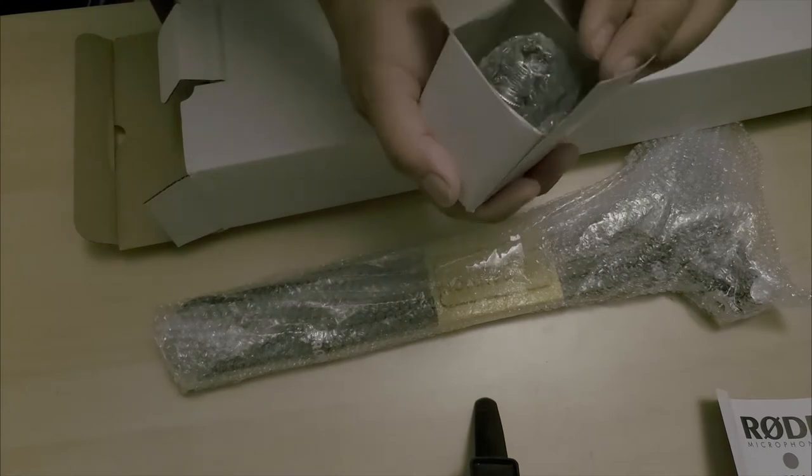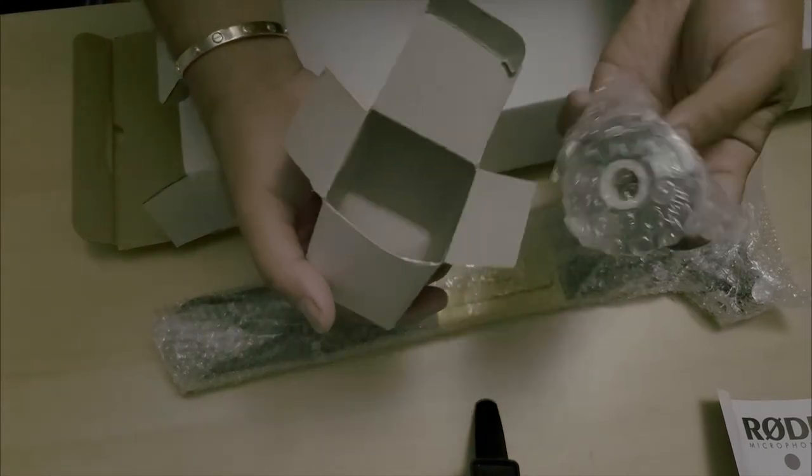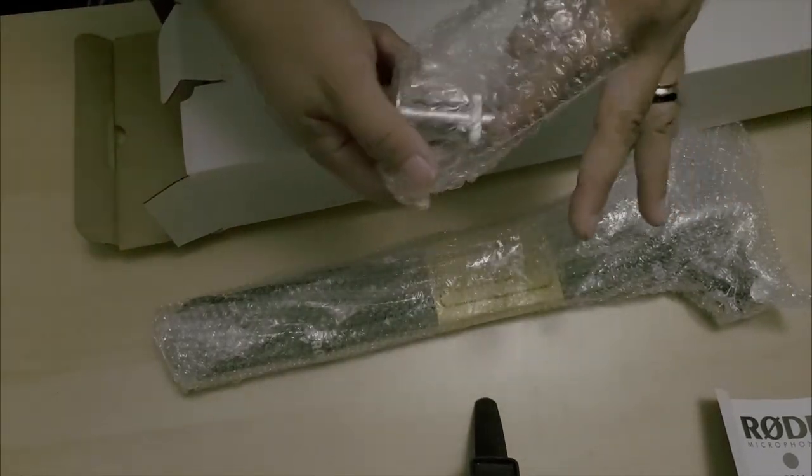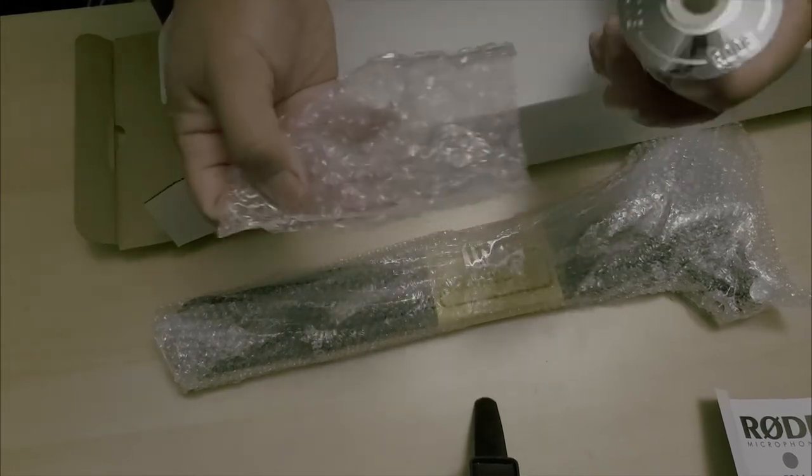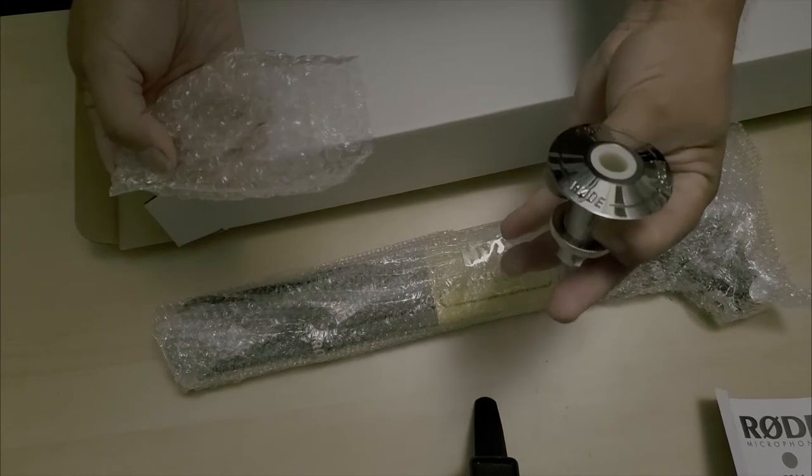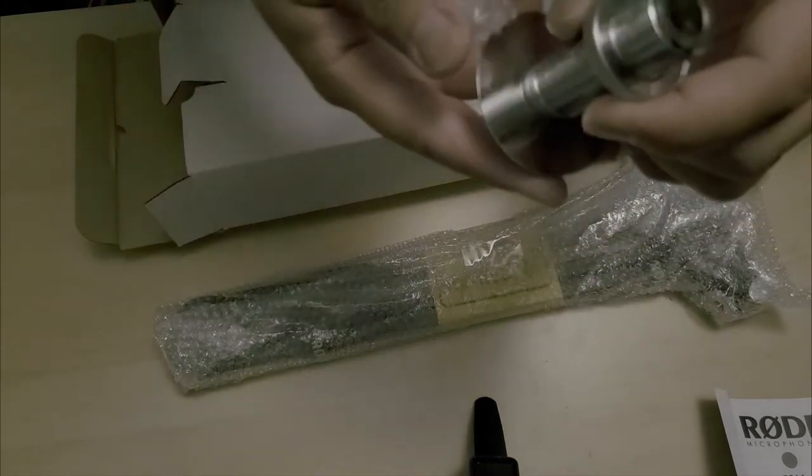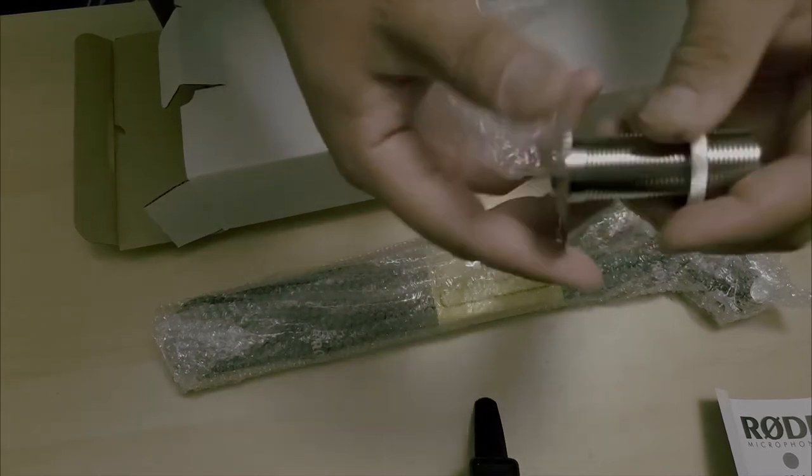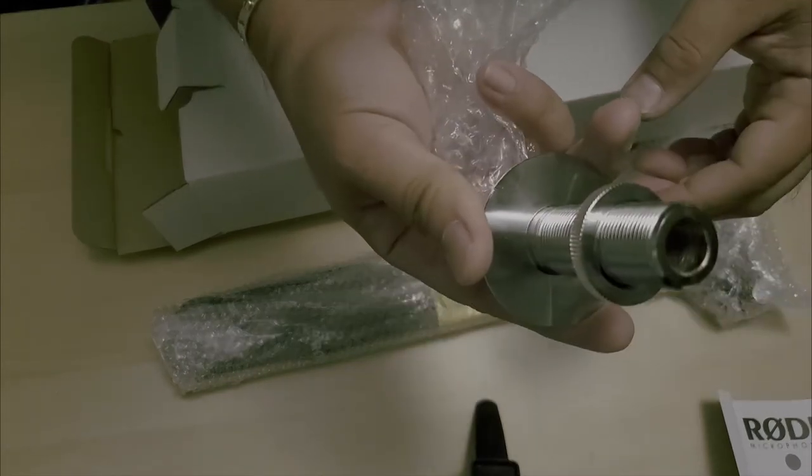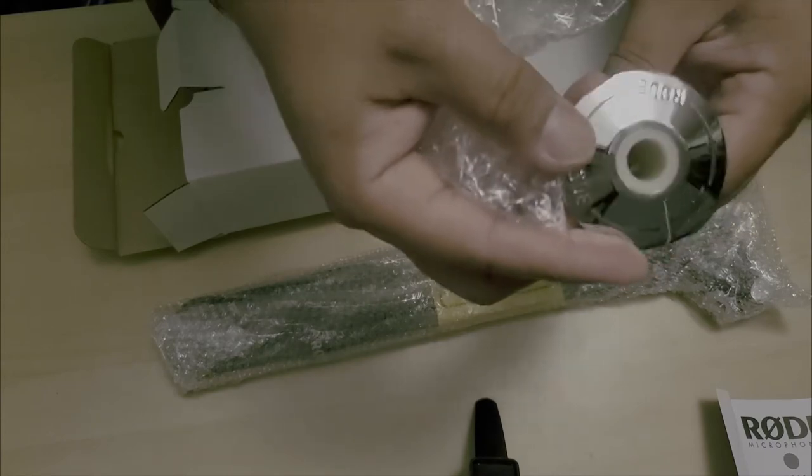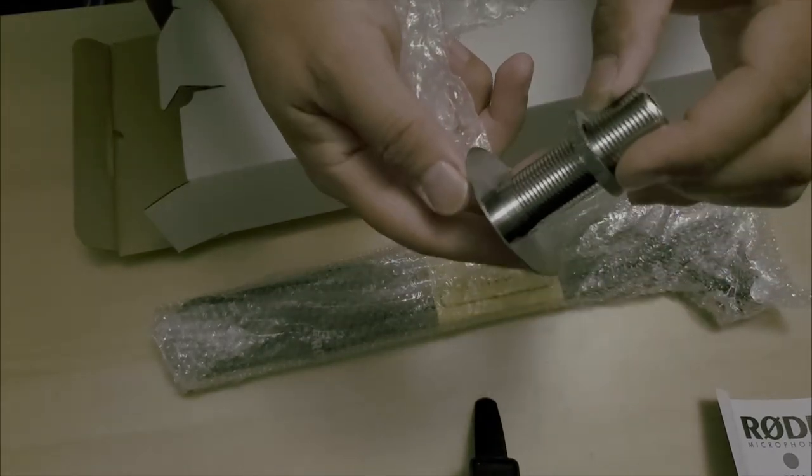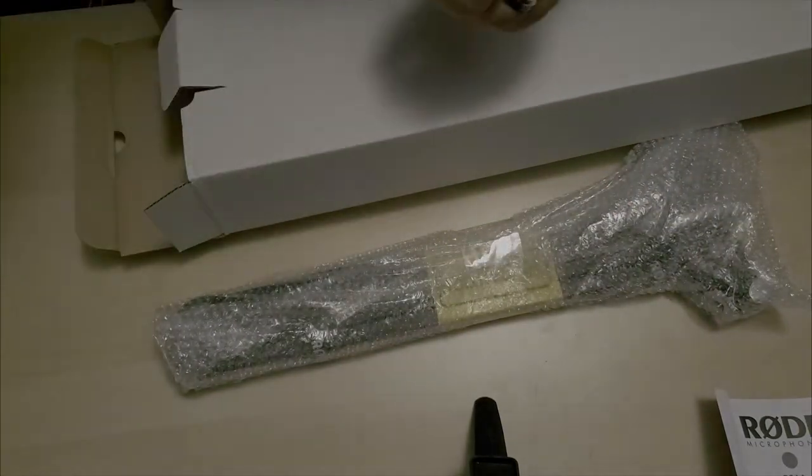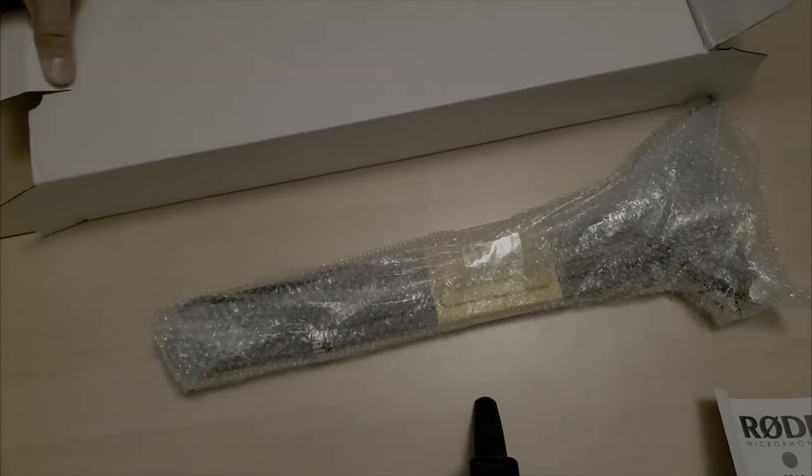I guess this goes to where the boom arm connects. That's nice. I know what this is for—if you want to drill a hole in your table, this screws in from the bottom so it's stable. I'm not sure I want to drill a hole in my table.